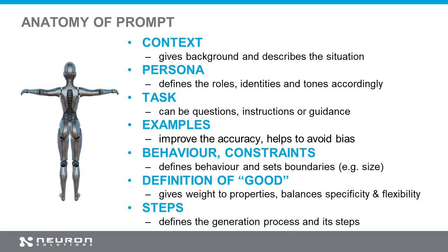Beyond examples, it's important to define the behavior — what we expect from the model — and also the constraints. For example, I told the model to summarize a song in one sentence. That's a constraint: you have only one sentence. I didn't specify how long the sentence should be, but still — one sentence. That's a kind of constraint.